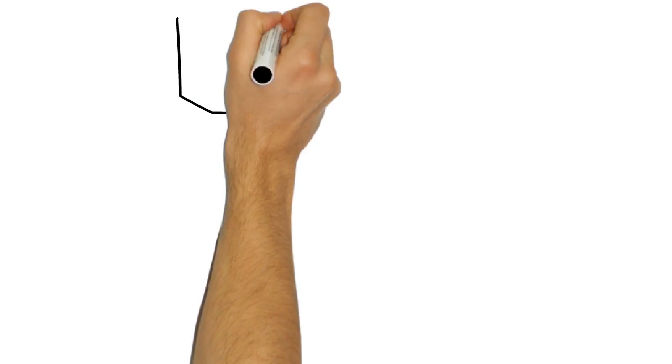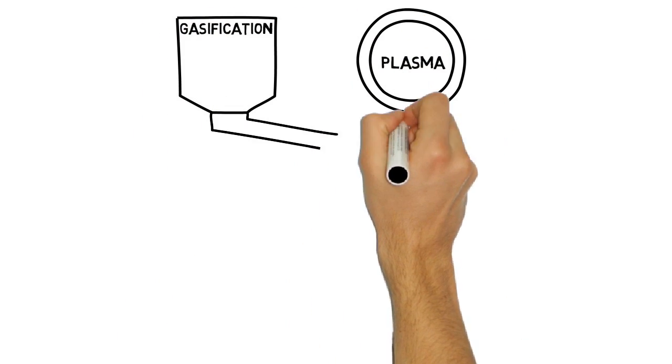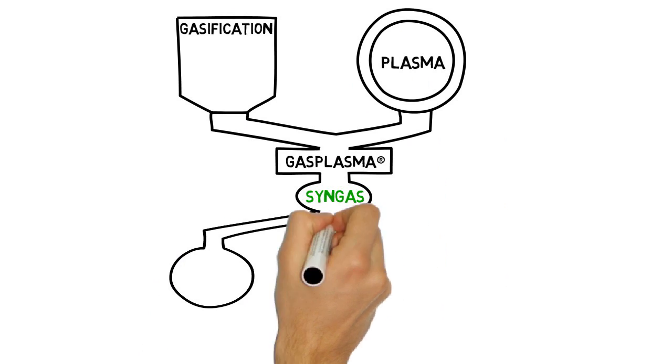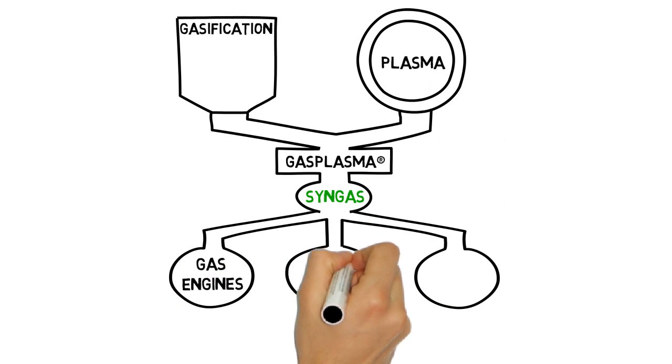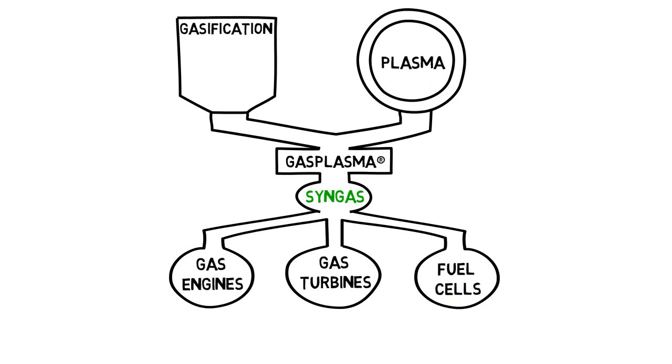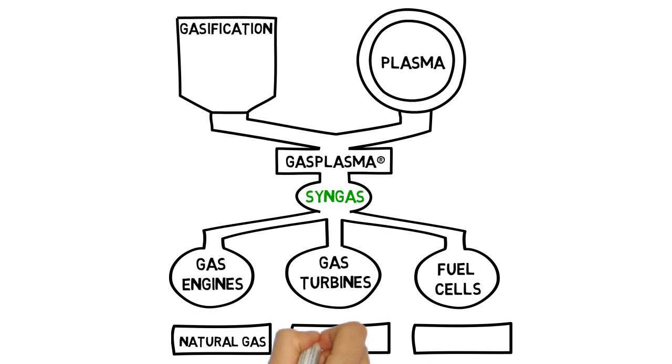This combines the use of gasification and plasma to produce a clean, high-quality syngas able to be used directly in gas engines, gas turbines, and/or fuel cells with a number of downstream processing options, including conversion to substitute natural gas, hydrogen, or liquid fuels.